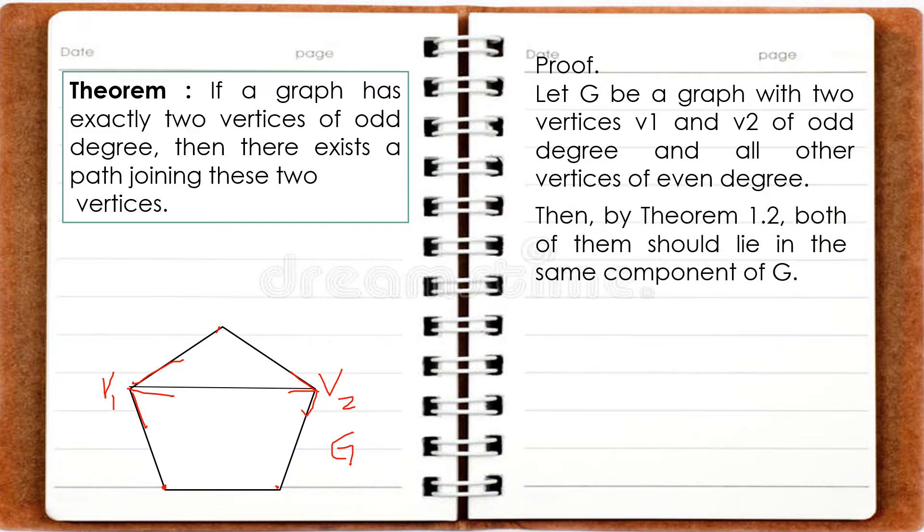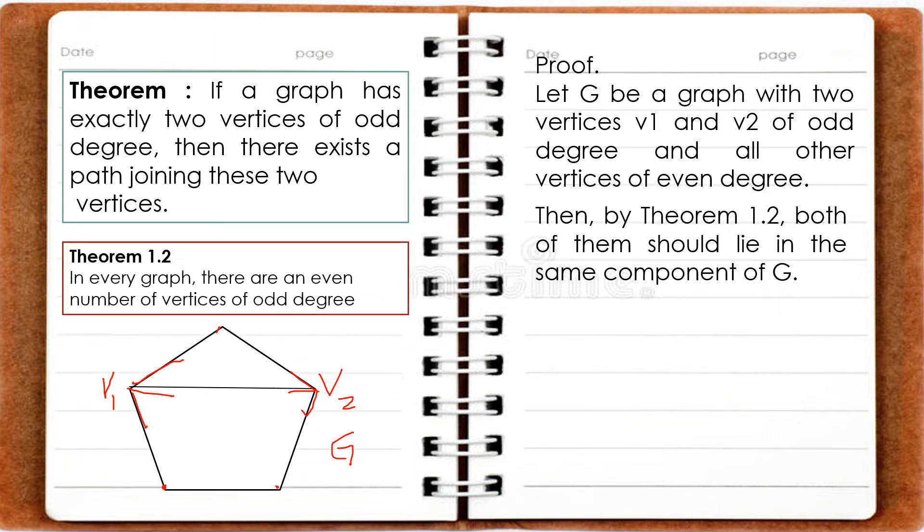Next, by Theorem 1.2, both V1 and V2 should lie in the same component of G. Theorem 1.2 states that in every graph, there are an even number of vertices of odd degree.